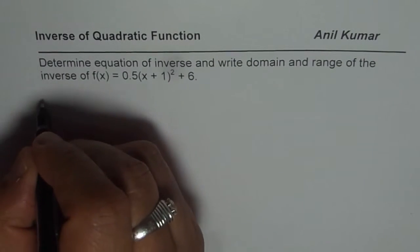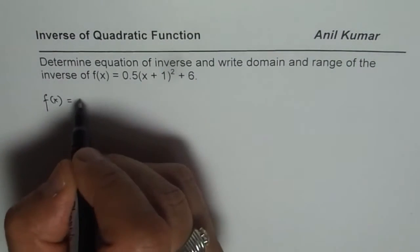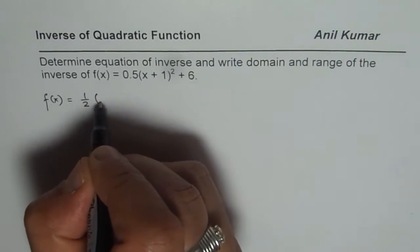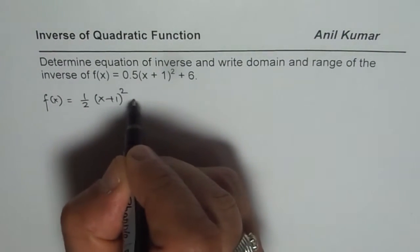Now let us write down the function first which is f(x) equals to 0.5 - I prefer to write in fractions - (x + 1)² + 6.